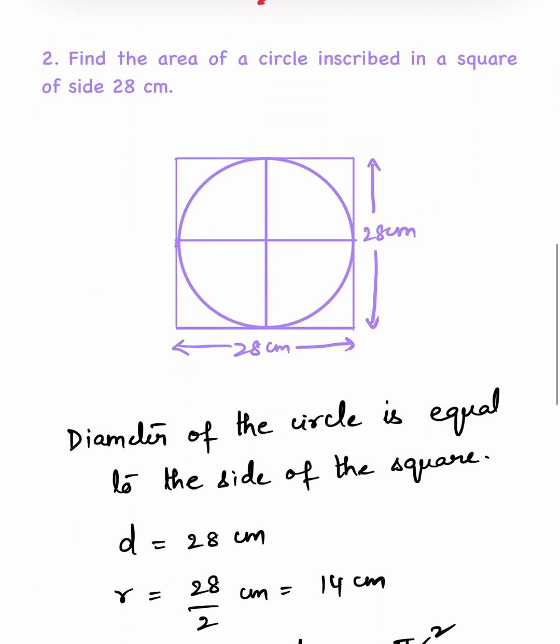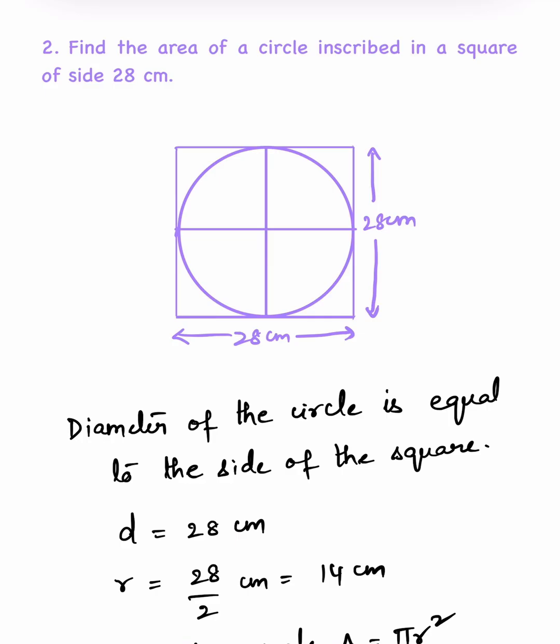Find the area of a circle inscribed in a square of side 28 cm. So here the circle is inside the square of side 28 cm. That means the diameter of the circle is equal to the side of the square.